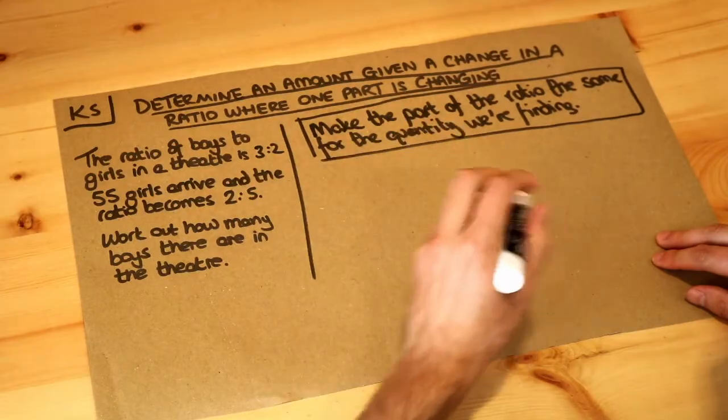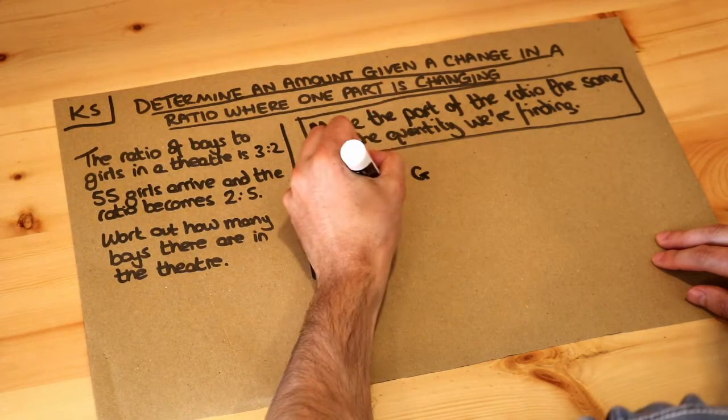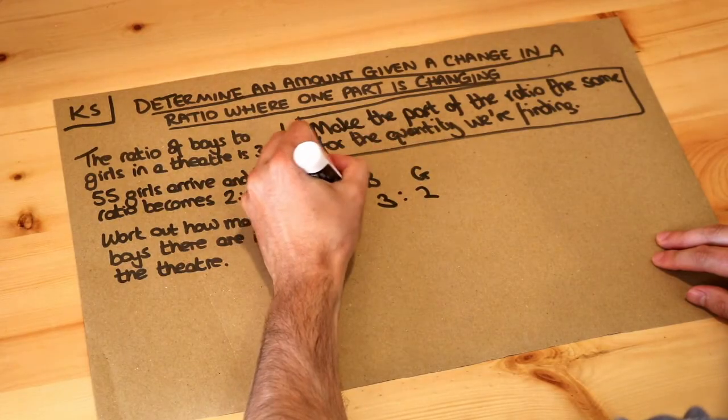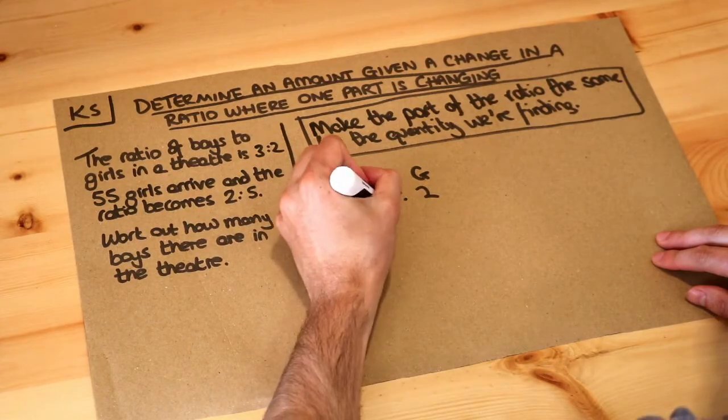So if we write the old and new ratio, there was a ratio of boys to girls of 3 to 2. That's the old ratio and then the new ratio after 55 girls arrived is 2 to 5.